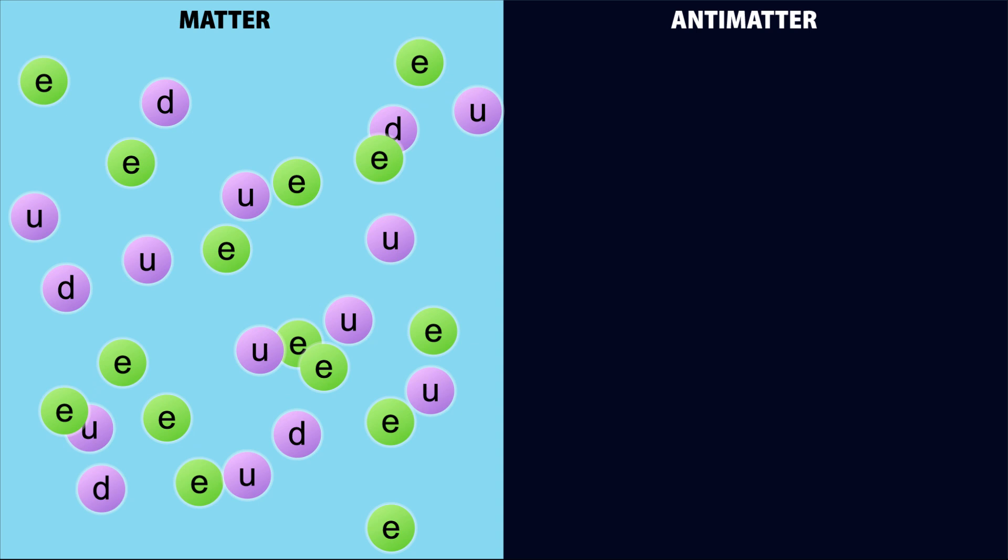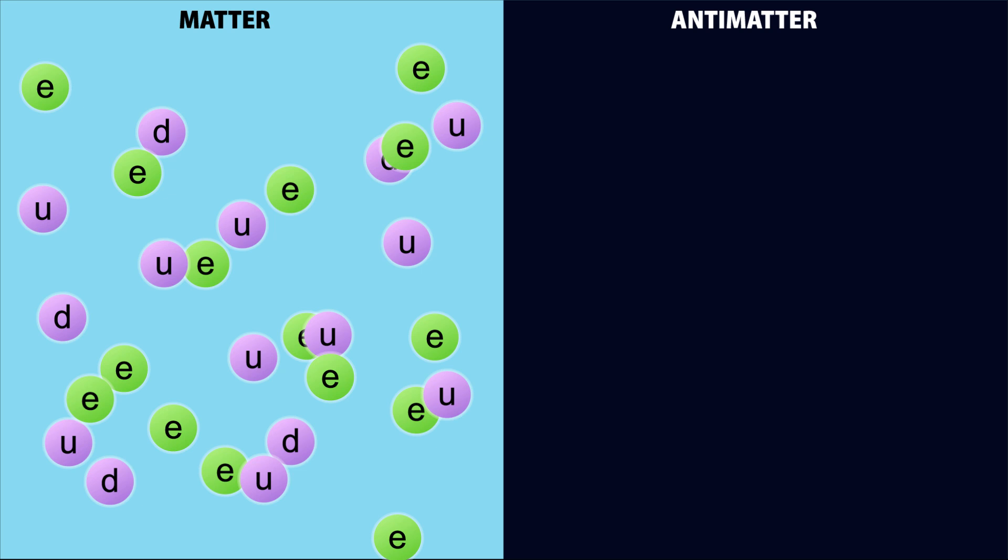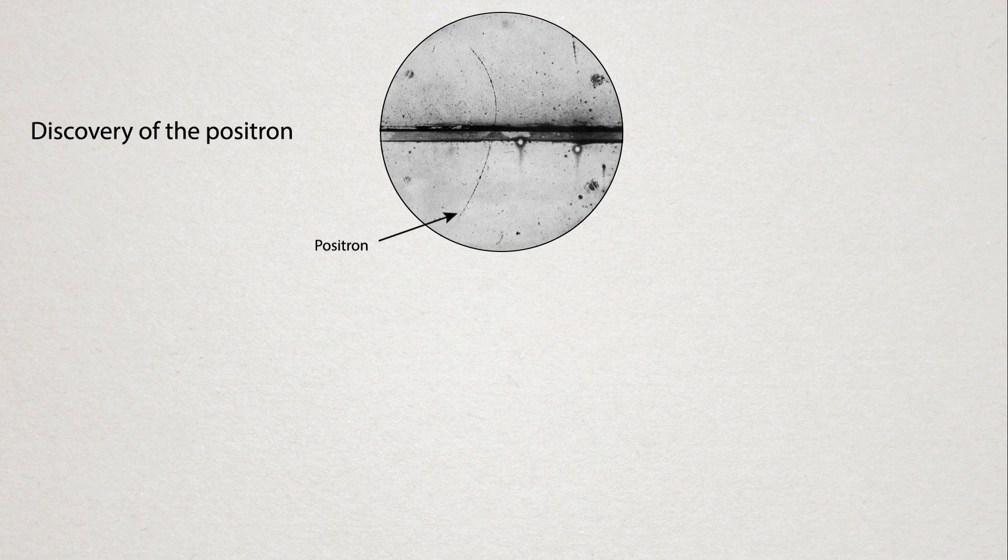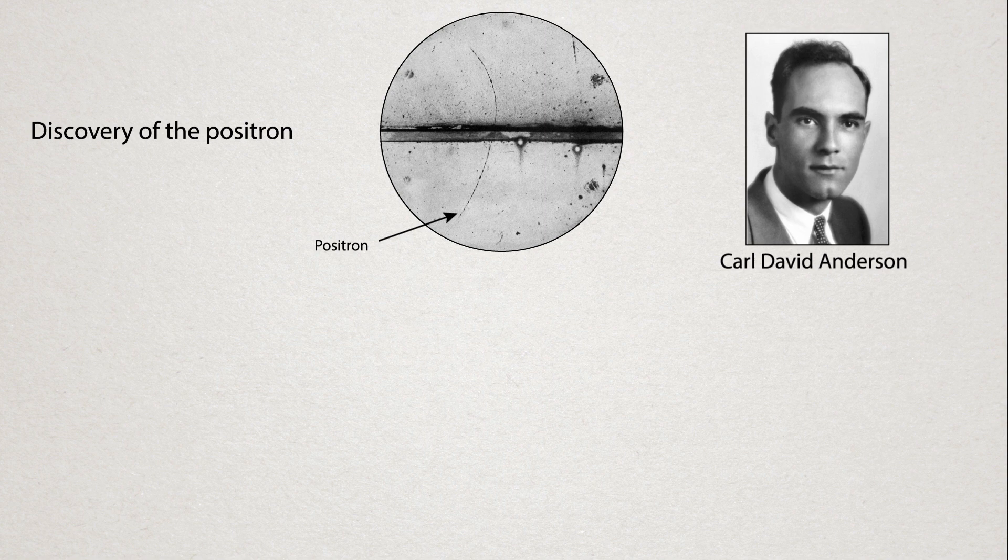Antimatter is often made in particle accelerators. It is a standard by-product of smashing things together at high velocities. Scientists have known about this for a long time. In fact, the first direct measurement of a positron, or an anti-electron, was made around 1930 by several different groups, but eventually, Carl David Anderson won the Nobel Prize in Physics in 1936 for this discovery.